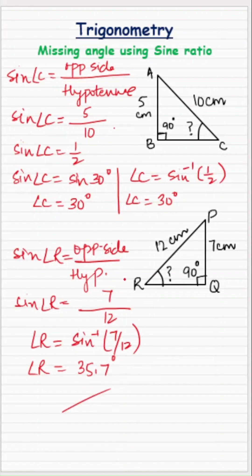So always remember, when you know two sides, always use sine inverse function to find the missing angle. That's all. Bye-bye.